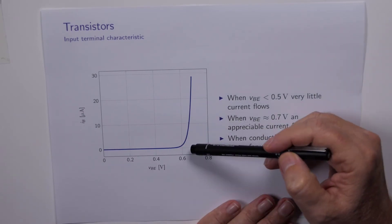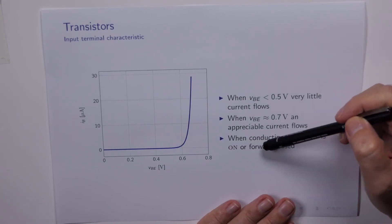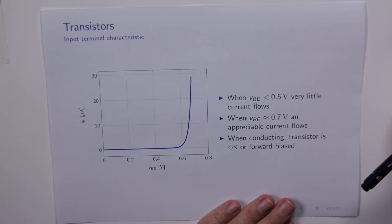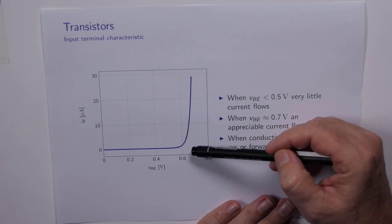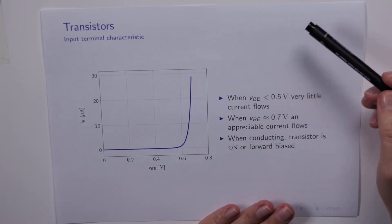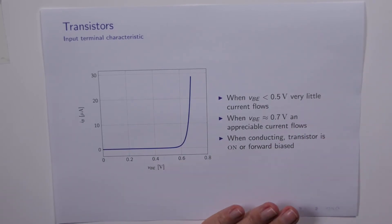When the diode is conducting, so we're somewhere up here, we say that the transistor is on or forward biased. Apart from that there's not much to say, except in order for the transistor to conduct, we need VBE to be around about 0.7 of a volt, and that's when we have an appreciable base current flowing.